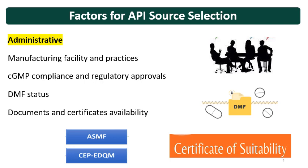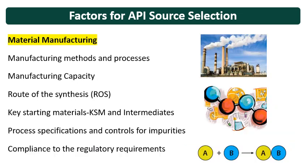Whenever you are going for the selection of the API and its source, some aspects need to be evaluated — like administrative aspects. The manufacturing facility and practices of the API supplier and manufacturer are required to be tested, seen and understood. Then whether CGMP compliance is there or not, what type of regulatory approvals the supplier holds, what is the DMF status — whether it is in application stage, active, or inactive — and whether there is any manufacturing alert given by the regulatory authority to that API supplier. Documents and certificates available with the supplier, like DMF, CEP, EDQM, need to be checked.